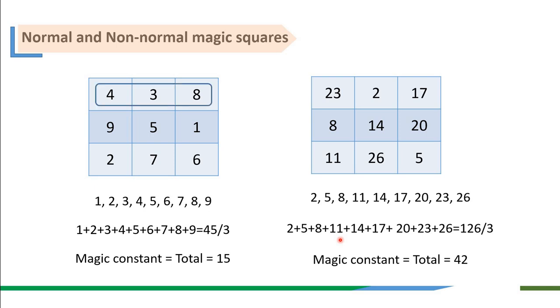The total of any of the rows is 15. Any of the columns is also 15 and the total of the diagonals is again 15. So the magic constant for this magic square is 15. For the right magic square, the total of any of the rows, any of the columns or even any of the diagonals is 42. That is, the magic constant for this magic square is 42.